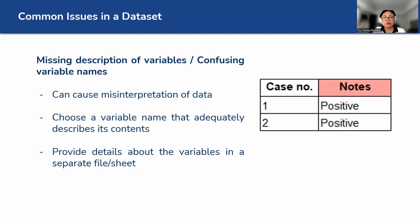Missing description of variables or confusing variable names. Like, it says here notes, and it says positive. What does that mean? Positive for what? Are they RT-PCR positive? Are they antigen positive? Are they HIV positive? So there has to be a description of the variables.